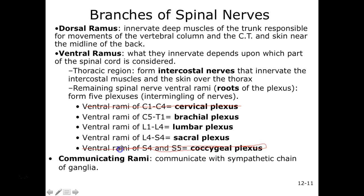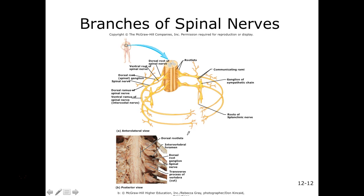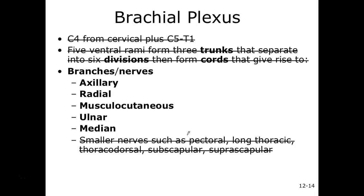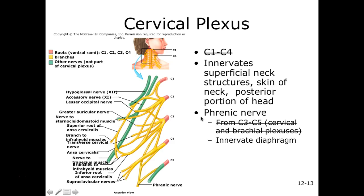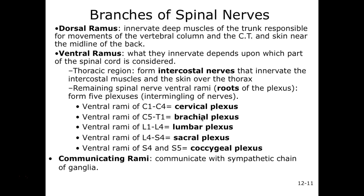Our brachial plexus gives supply to all of our upper limb. It comes from the ventral rami of C5 to T1 — so C5, C6, C7, C8, and T1 — all intertwining and braiding themselves to create the brachial plexus. Next we have our lumbar plexus from L1 to L4 ventral rami. And lastly, our sacral plexus from the ventral rami of L4 through S4 — so there's a little overlapping there.